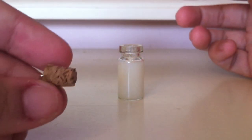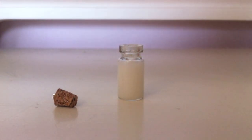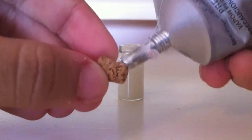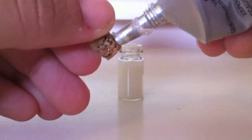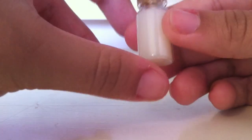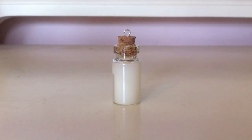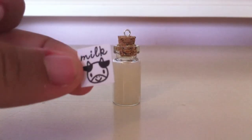Now that your charm is fully baked, go ahead and glue on your cork. This is where we use our E6000. Now go ahead and glue your label on.